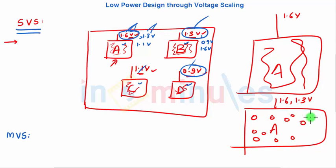At some point of time, some blocks of A can operate at 1.6V. At other instances of time, some blocks of A can operate at 1.3V, and so on and so forth. So at different instances, the different blocks of the circuit are given different supply voltages, and this is nothing but your multilevel voltage scaling.